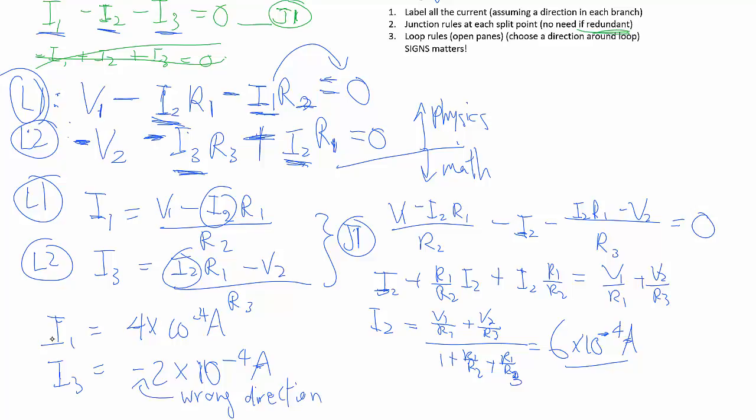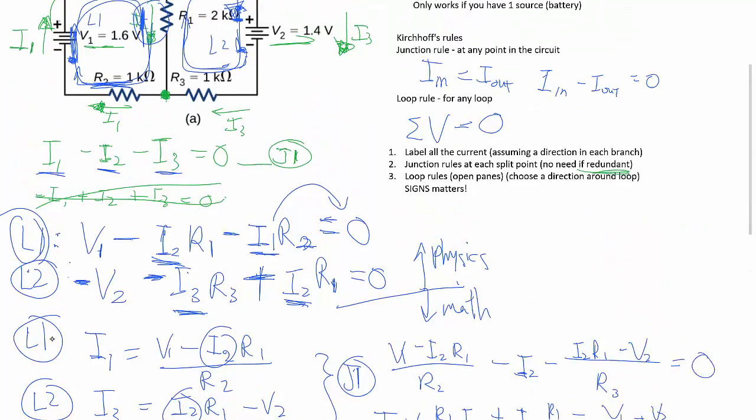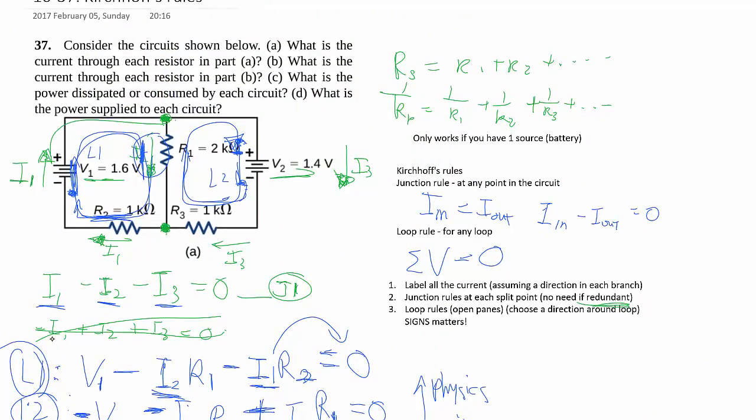Well, this negative, all that means is just that we got the wrong direction. So then if we go back up here, we can see that instead of I3 being flowing to the left, I3 should really flow to the right. And that's it. We have all the magnitude and direction for part A.